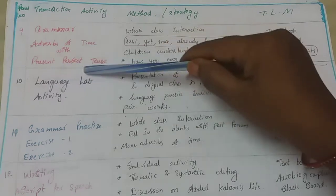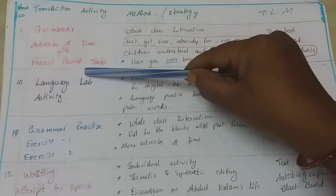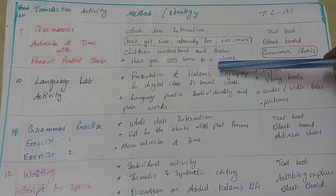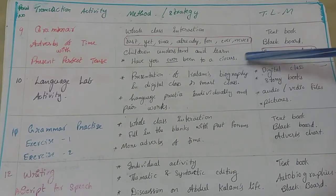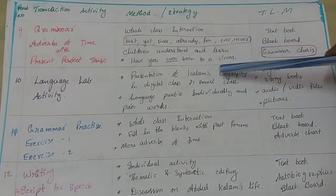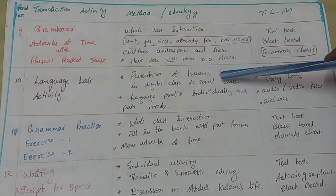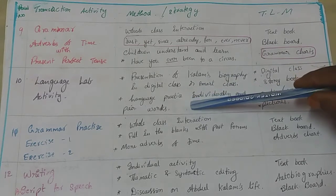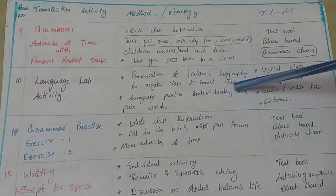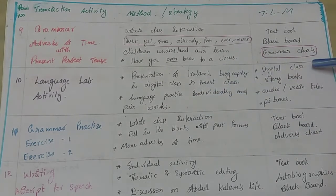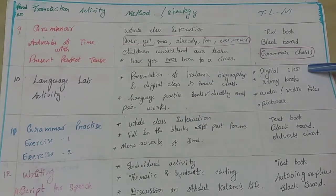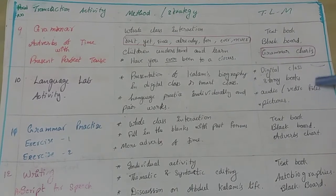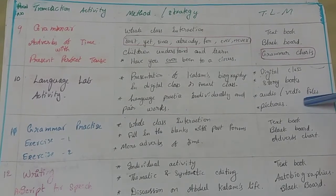In the 10th period, we explain the language lab activity: a presentation of Kalam's biography in a digital class or smart class. Language practice is done individually and in pair work. TLM: digital class, story books, audio and video files, pictures, etc.